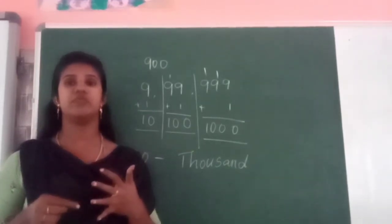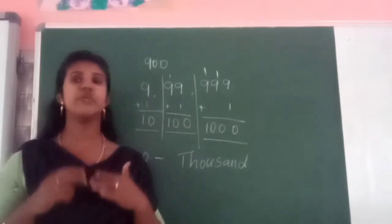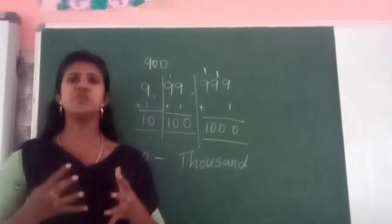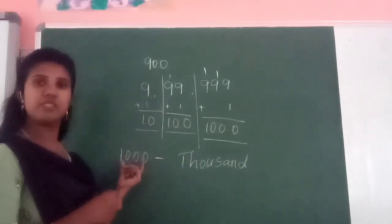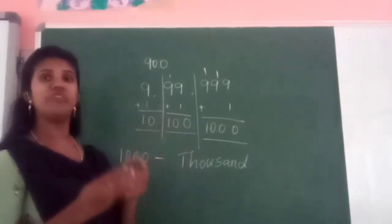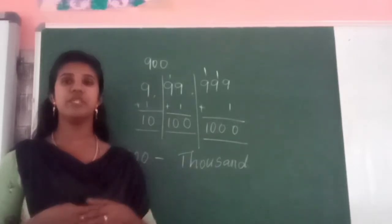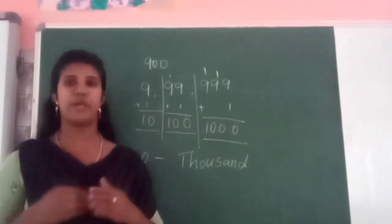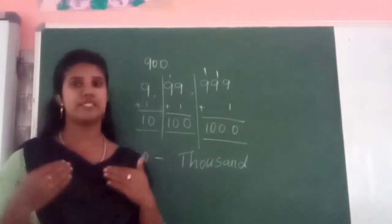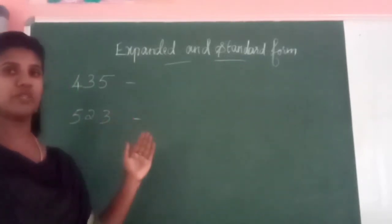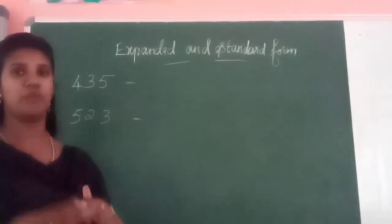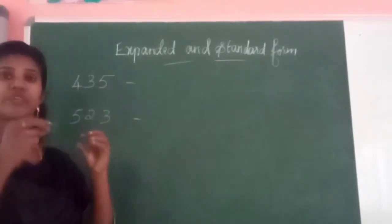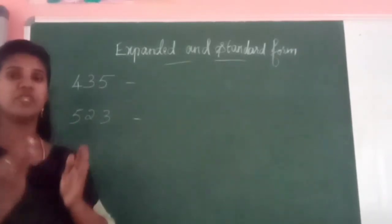The next topic is expanded and standard form. You already know the expanded and standard form. Standard means as usual — how we normally write a number: 1000 means 1000, 10 means 10, 100 means 100. That is standard form. Expanded means we split the number and arrange it according to place values. That is expanded form.